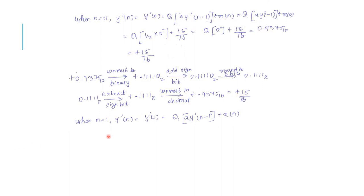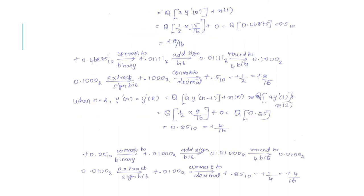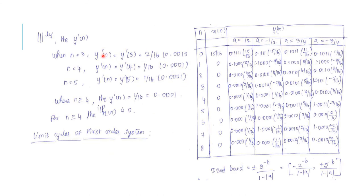This is now a repetitive or iterative process. For n = 1, substitute y'(0) = 15/16 and x(1) = 0, then repeat the same procedure for n = 2, 3, 4, and 5, substituting and finding all those values.